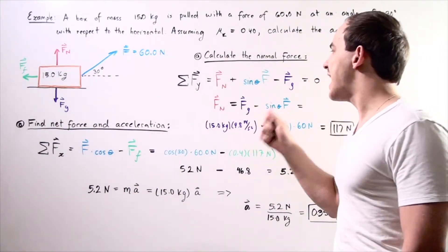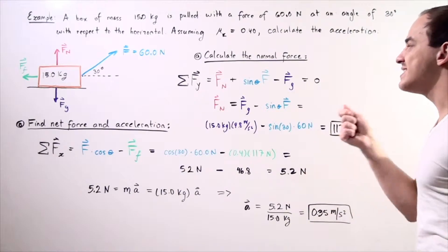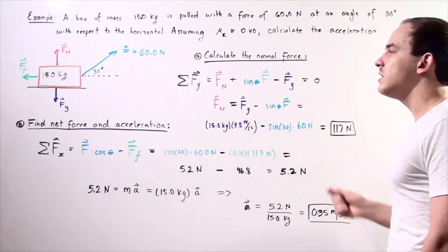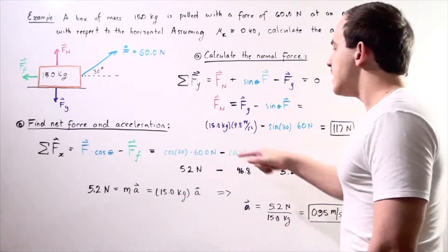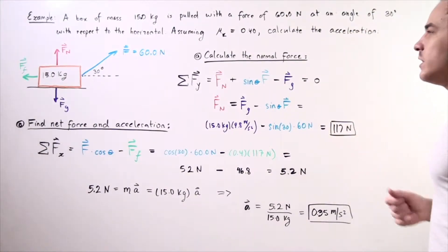We rearrange our equation and solve for the normal force, finding that the normal force equals the gravitational force minus sine of the angle multiplied by F. This becomes 30 newtons, and we get 117 newtons as our value for the normal force pointing upward along our y axis.